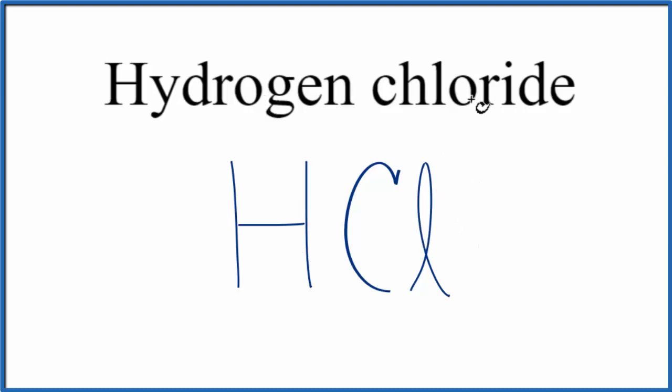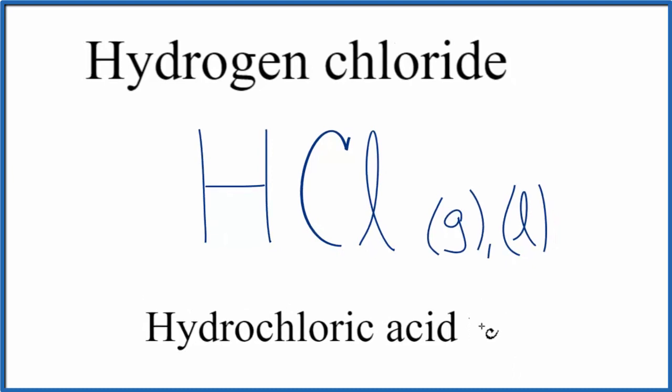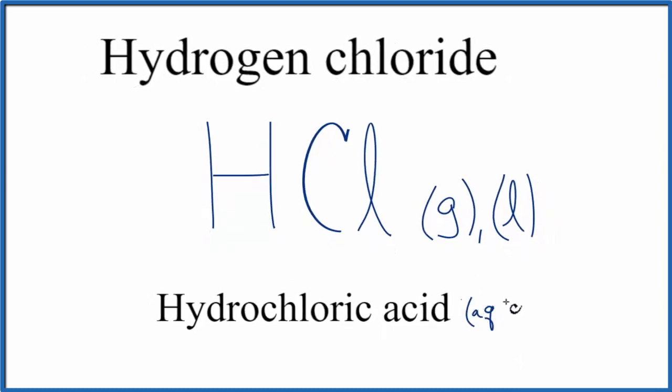One thing to be aware of: when we say hydrogen chloride, we're talking about it being a gas or a liquid, not dissolved in water. If we put HCl in water, we call that hydrochloric acid, and we'd write (aq) after it to show that it's aqueous, dissolved in water.